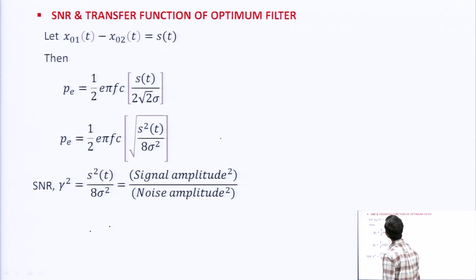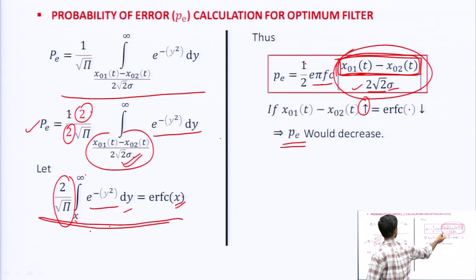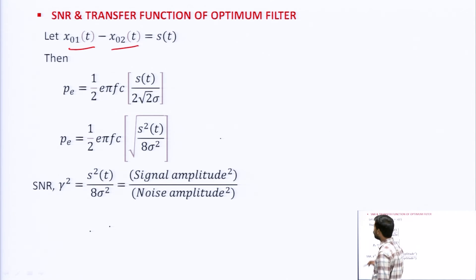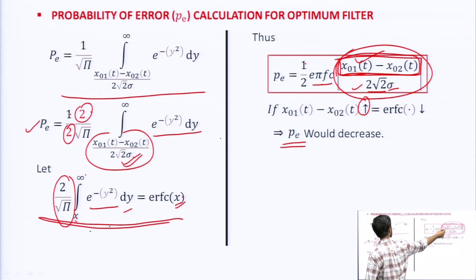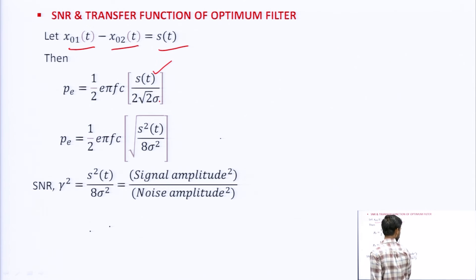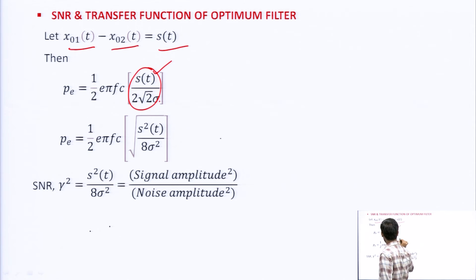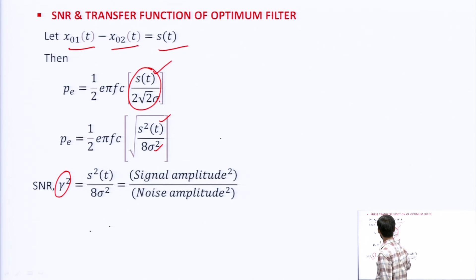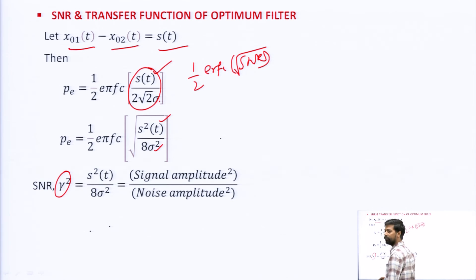Now we find the SNR and transfer function of the optimum filter. Let S(t) = x_naught_1(t) - x_naught_2(t), so probability of error = (1/2) · erfc(S(t) / (2√2 · σ)). Writing inside the square root: SNR γ² = S²(t) / (8σ²), which is signal amplitude power divided by noise power.